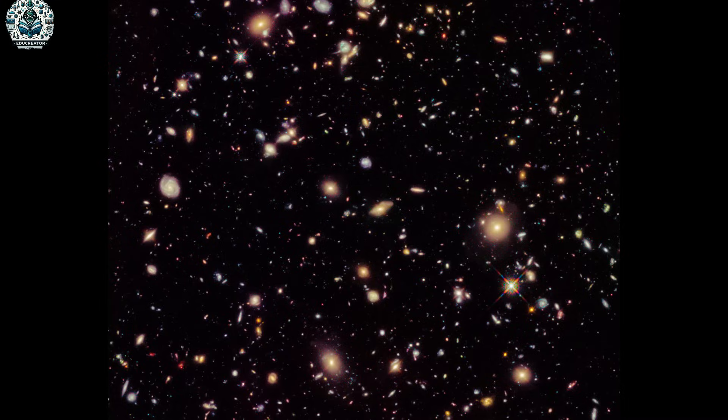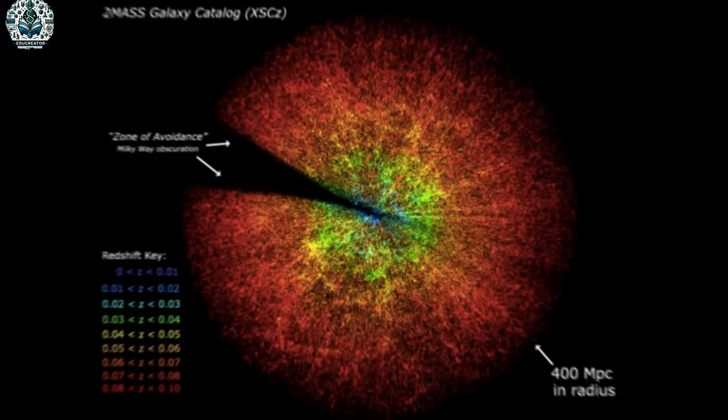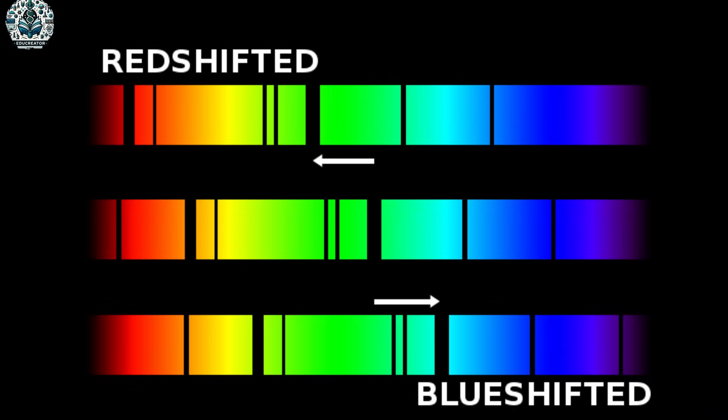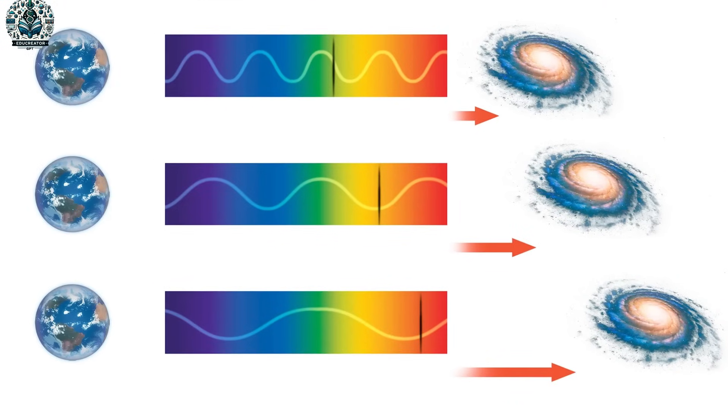But how do we know how many light years away the objects we are observing are? It's not as simple as pulling out a tape measure, but it's super cool. Let me give you a quick tour. First off, we've got redshift. Think of the universe as a stretching balloon. As it grows, light from galaxies stretches too, turning redder. By seeing how red the light is, astronomers get a hint of how far away a galaxy is, kind of like hearing an ambulance siren change pitch as it zooms past.